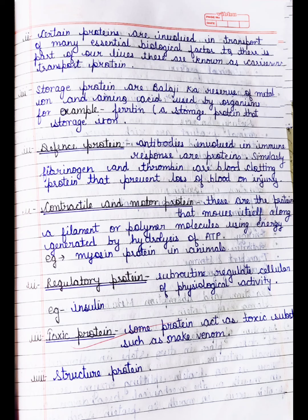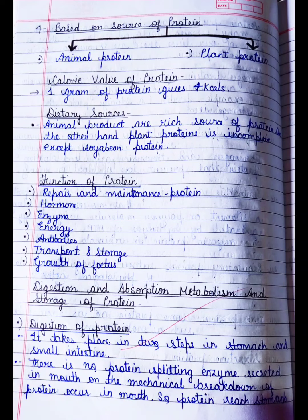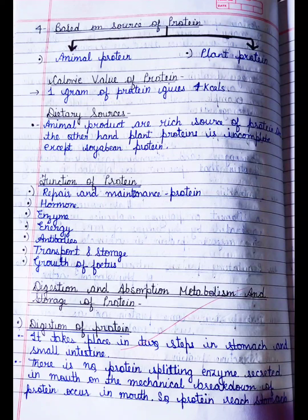The last classification is based on source: animal protein and plant protein. The caloric value of protein is 4 kilocalories per gram. Regarding dietary sources, animal products are rich sources of protein. Plant protein is incomplete except soya bean protein. Soya bean is the only plant protein that can be considered a complete protein; all other plant proteins are incomplete.